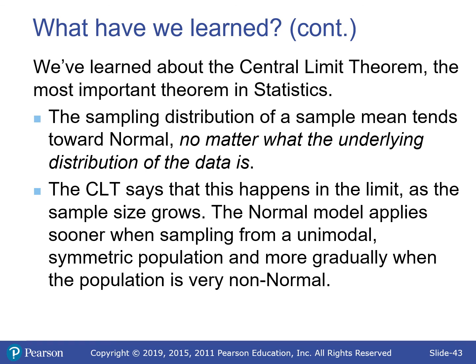The CLT is very possibly the most important theorem in statistics. It says the sampling distribution of a sample mean gets more and more normal as sample size grows, no matter what the population distribution is — even if it's skewed or we know nothing about it. The normal model applies sooner when sampling from a unimodal symmetric population, and more gradually when it's very non-normal.